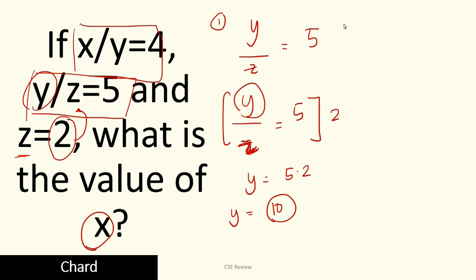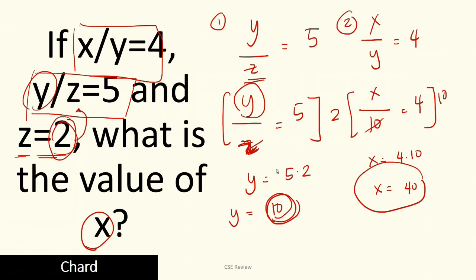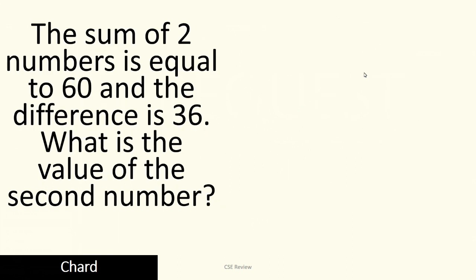Now, to find x, substitute y into the second equation: x over y equals 4. We now know y is 10, so x over 10 equals 4. Multiply both sides by 10 to cancel the denominator, and x equals 4 times 10, or x equals 40. So that's the answer. We reversed the given information — filled in z to get y, then substituted y to get x. You need to be comfortable with algebra and its rules to solve this problem.